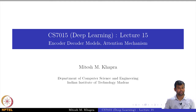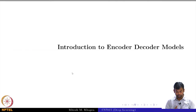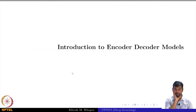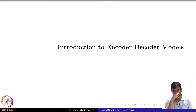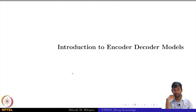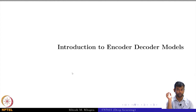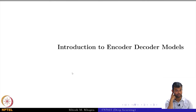In this lecture we are going to talk about encoder decoder models and attention mechanisms. This is a very interesting lecture because this is where we put all the pieces that we have learned so far. We have learned three types of networks: feed forward networks, recurrent neural networks and convolutional neural networks, and you have seen independent applications of each — word2vec, image classification and so on.